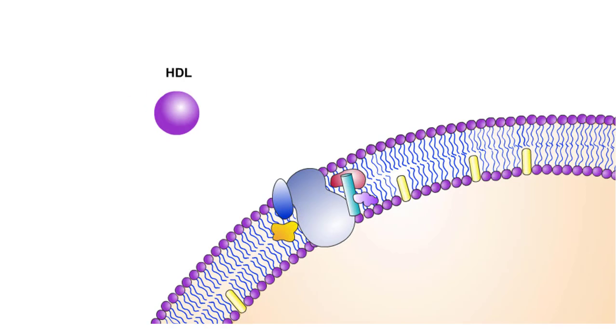The transfer of cholesterol from cells to HDL requires several different cell surface proteins. One of these proteins is believed to be a transport protein, or flippase, that moves cholesterol from the cytosolic leaflet of the cell membrane to the extracellular leaflet. The other proteins are responsible for recognizing HDL and converting the cholesterol to cholesterol esters.